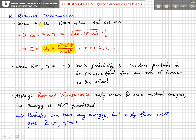When E is greater than U0, that is when the energy of the particle is larger than the potential barrier height, then you can get resonant tunneling, but in general you just get transmission and reflection at an arbitrary energy.